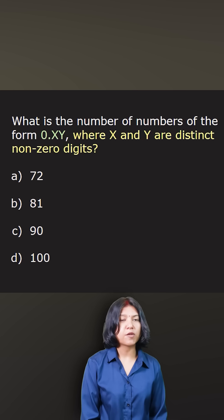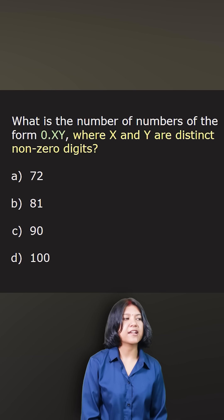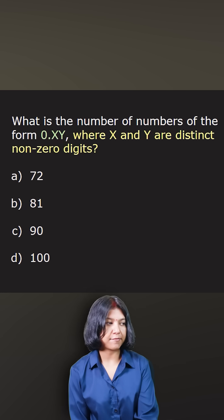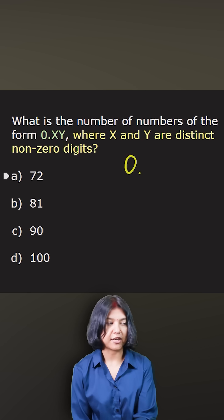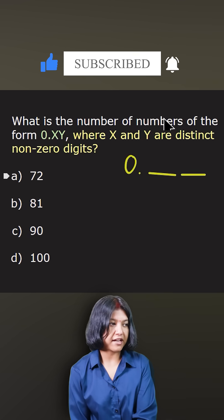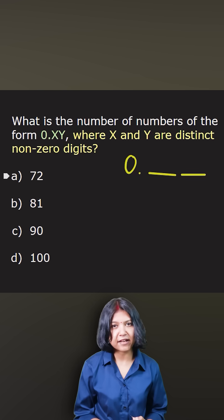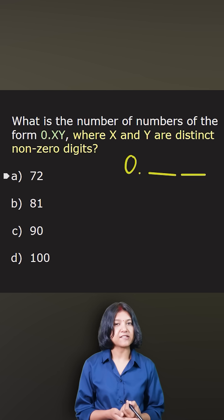What is the number of numbers of the form 0.xy where x and y are distinct non-zero digits? You want to write something as 0.__ - you have to fill up two places such that the two digits are distinct. They cannot be numbers like 0.55 or 0.66; you have to reject these numbers.